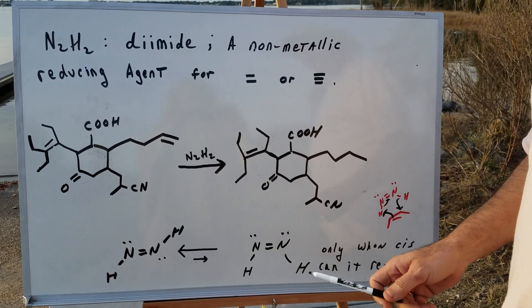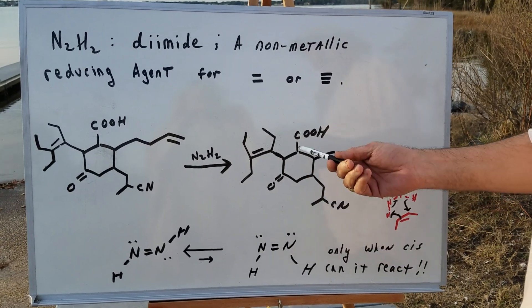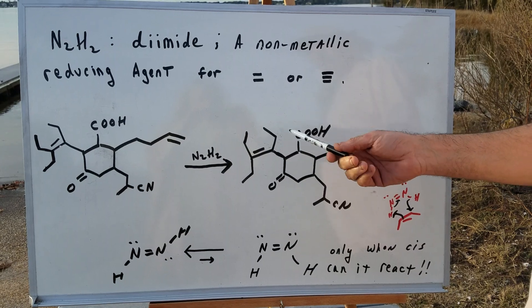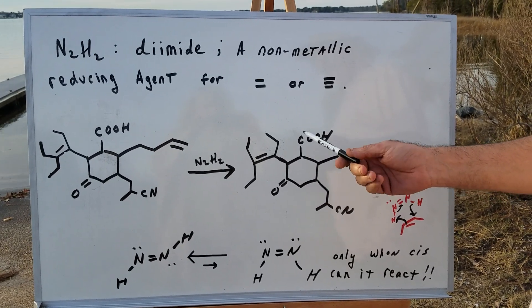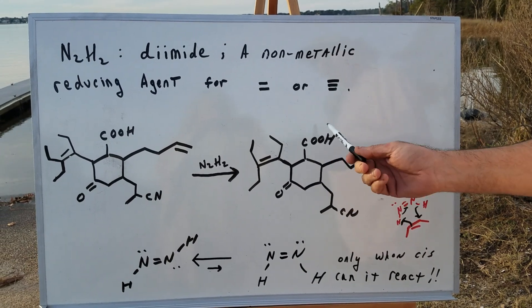Now, this is a non-metallic reducing agent that's going to operate on double or triple bonds. The reducing agents you probably know are like NaBH4, which is sodium borohydride, or LiAlH4, lithium aluminum hydride, or even hydrogen and platinum.